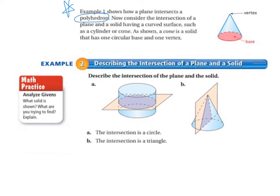Now we're going to consider the intersection of a plane and a solid having a curved surface, such as a cylinder or a cone. As shown, a cone is a solid that has one circular base and one vertex.